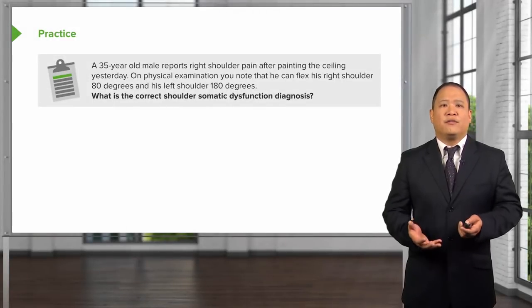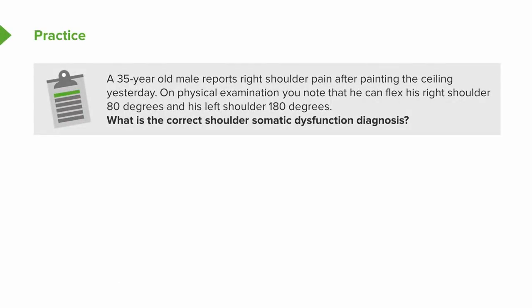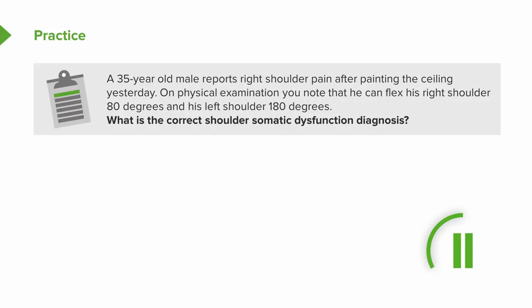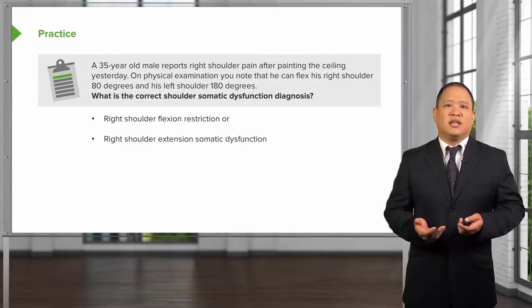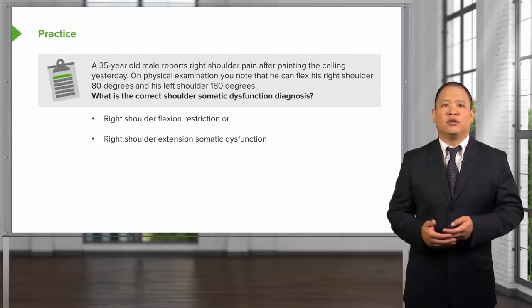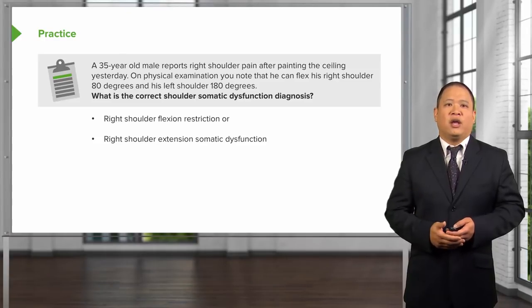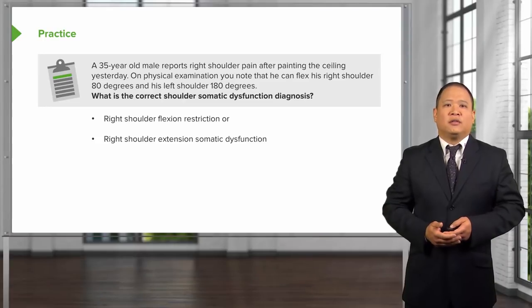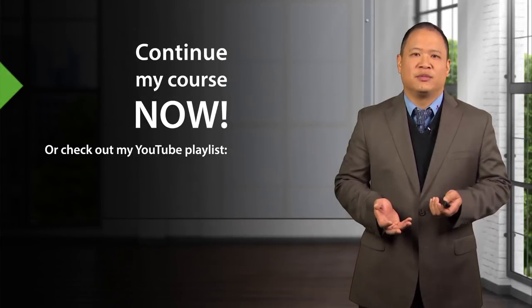Let's practice this information. A 35-year-old male comes in with right shoulder pain after painting the ceiling. On physical exam, he can flex his right shoulder only 80 degrees while his left shoulder flexes 180 degrees. The right shoulder is the problem shoulder with limited flexion. Since somatic dysfunction is named for its freedom of ease, this is diagnosed as a right shoulder extension somatic dysfunction.